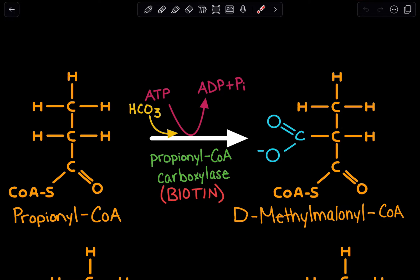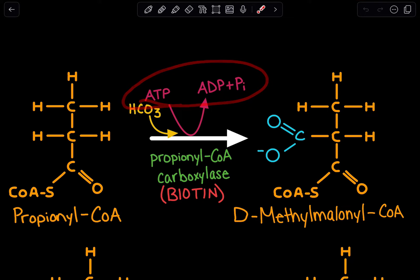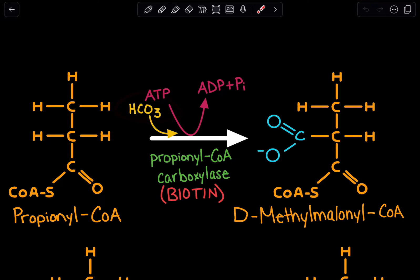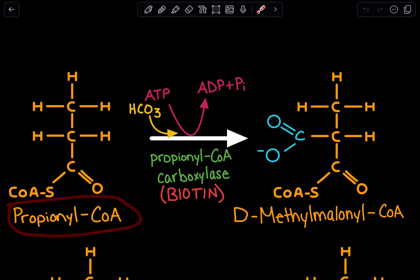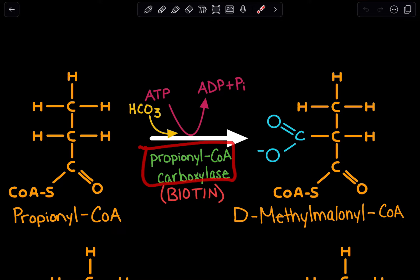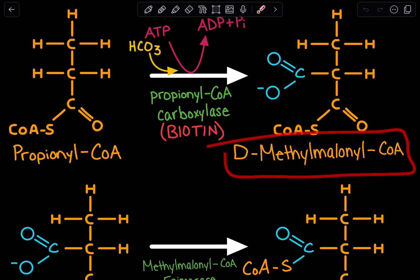This step requires ATP, which is broken down into ADP and inorganic phosphate as the energy source, and we are introducing a bicarbonate. We introduce this bicarbonate, and as a result we get a structure with a C double bond O and oxygen introduced to our propionyl-CoA. There is a separate video on the mechanism of propionyl-CoA carboxylase to see exactly how bicarbonate facilitates this reaction. Regardless, we get D-methylmalonyl-CoA.